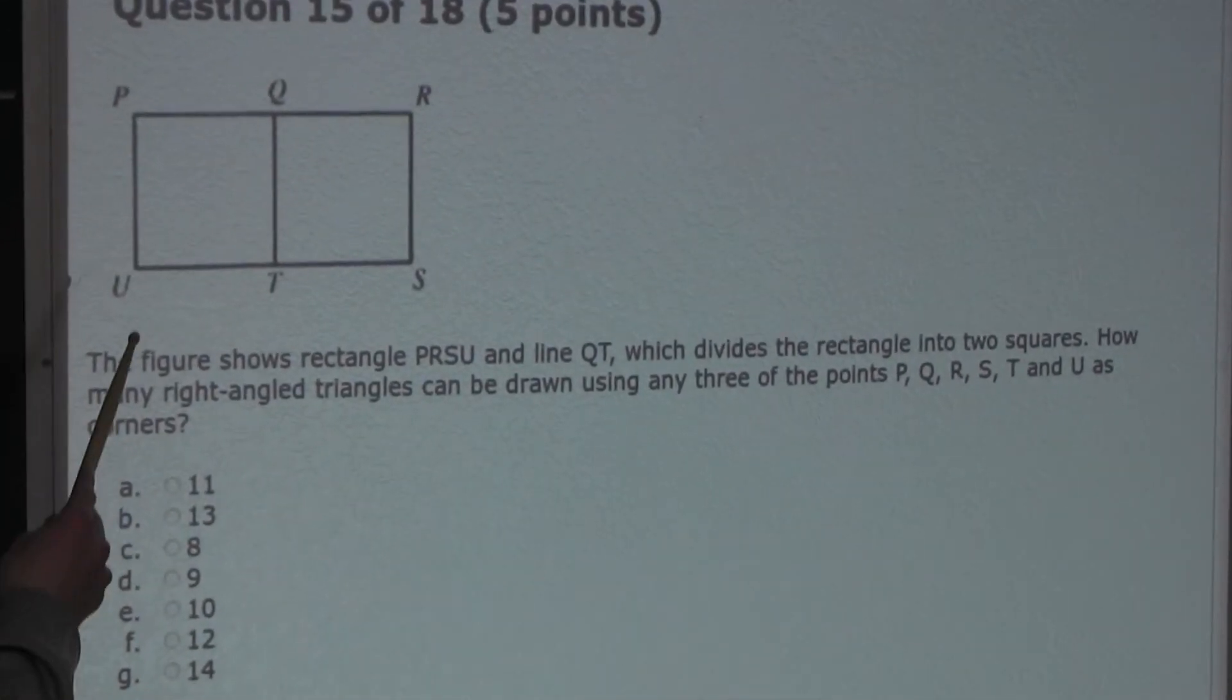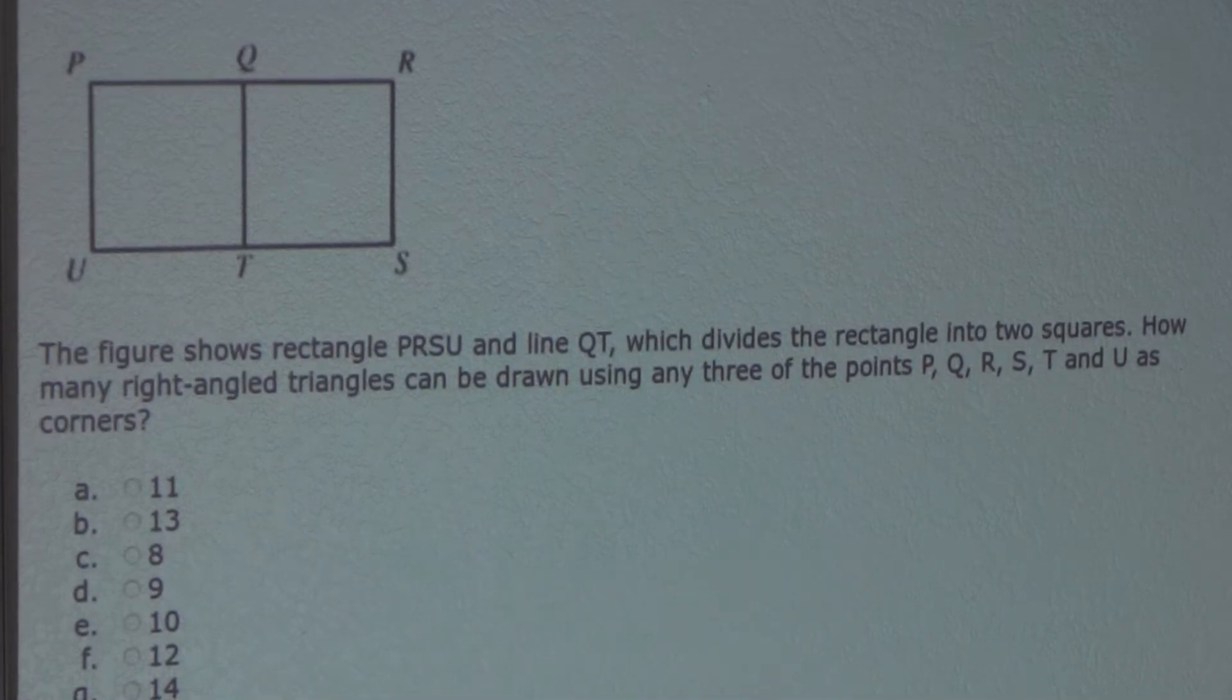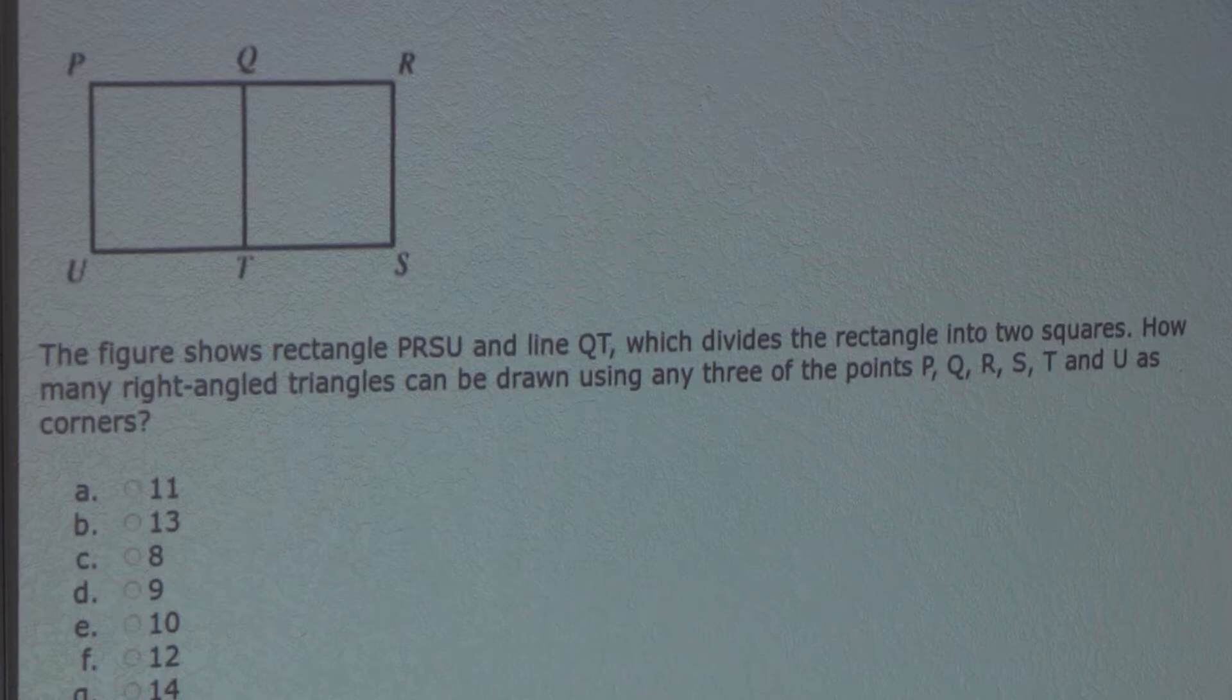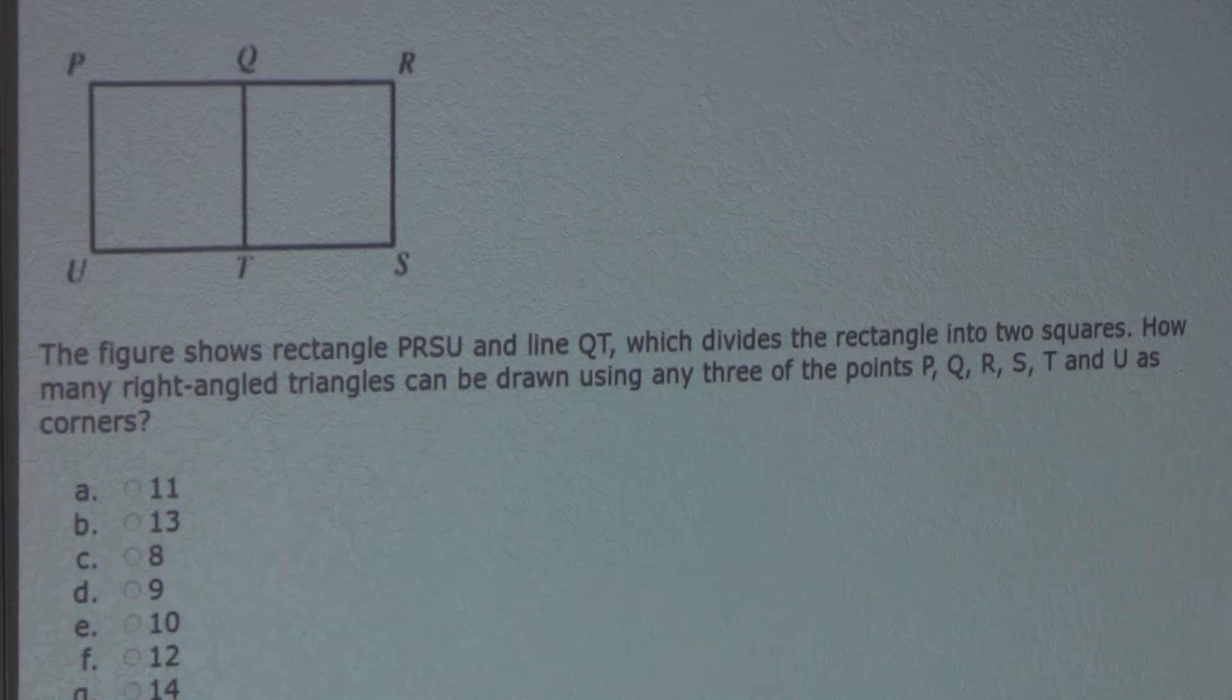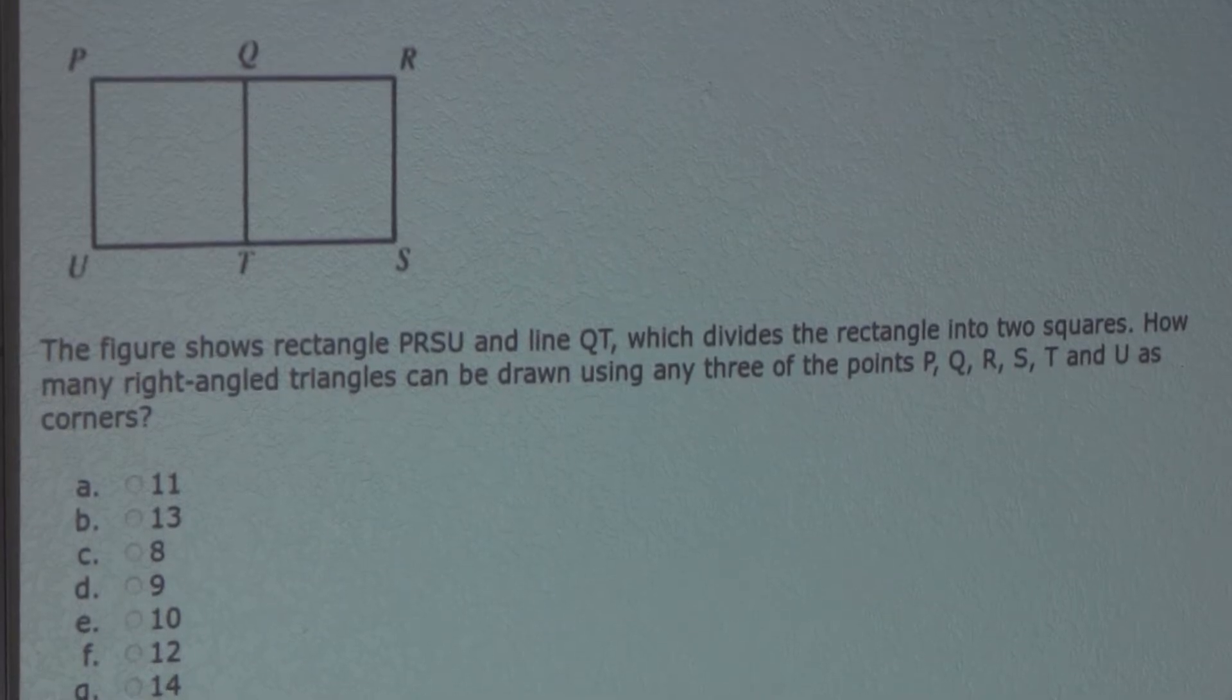The figure shows rectangle PRSU and line QT, which divides the rectangle into two squares. How many right-angled triangles can be drawn using any three of the points P, Q, R, S, T, and U as corners?